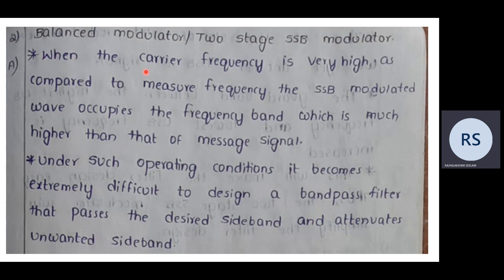When we compare carrier frequency with message frequency, if the carrier frequency is very high compared to the message frequency, the single sideband modulated wave occupies a frequency band much higher than that of the message signal. In this case, it becomes impossible to design a bandpass filter to suppress the unwanted sideband. Therefore, the carrier frequency should not be very high relative to the message frequency, as it makes bandpass filter design very difficult.